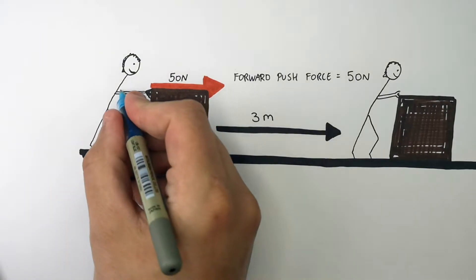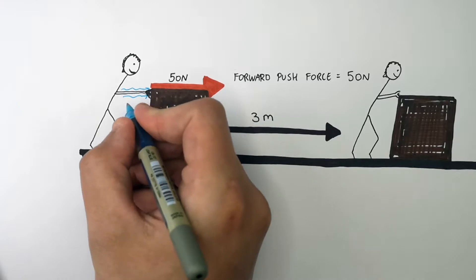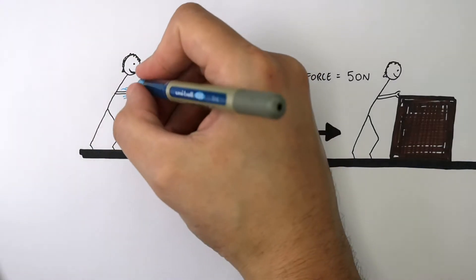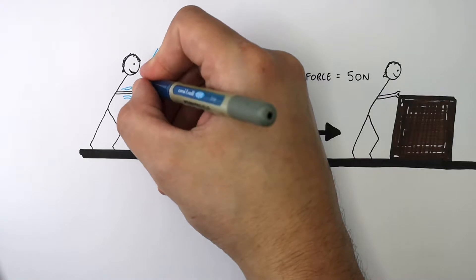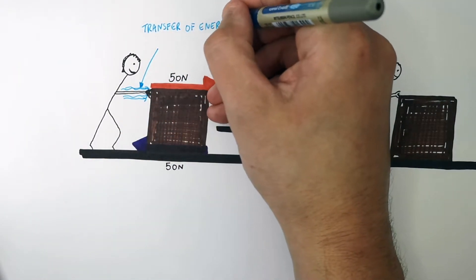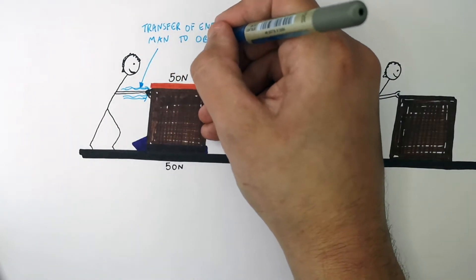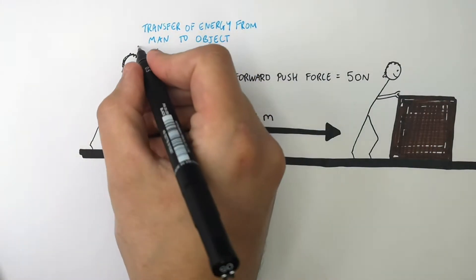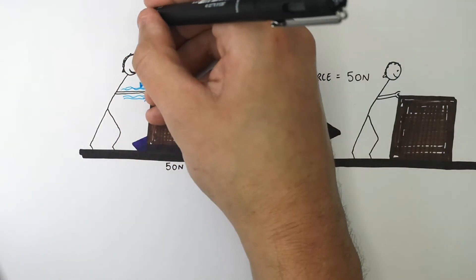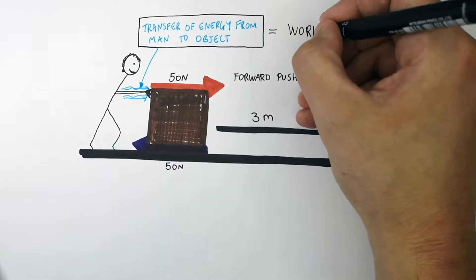Energy will have been transferred from the energy stores of the person to the box. To push the box with a force of 50 newtons, there has to be a transfer of energy from the man's chemical store to the kinetic store of the object. This energy transfer from the man's chemical store to the kinetic store of the object is the same thing as saying work done.